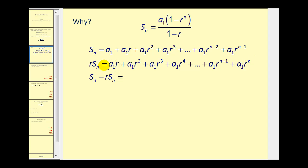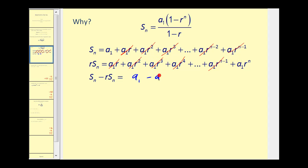Next we subtract these two equations: S sub n minus r times S sub n. Most of the terms simplify out — for example, a sub one times r minus a sub one times r, a sub one times r squared minus a sub one times r squared, and so on, all the way to the end where we are left with a sub one times r to the power of n. So this difference equals a sub one minus a sub one times r to the power of n. Factoring out S sub n on the left gives S sub n times the quantity one minus r equals a sub one minus a sub one times r to the power of n.